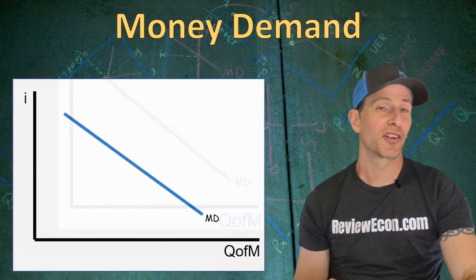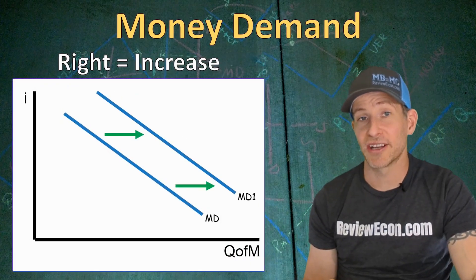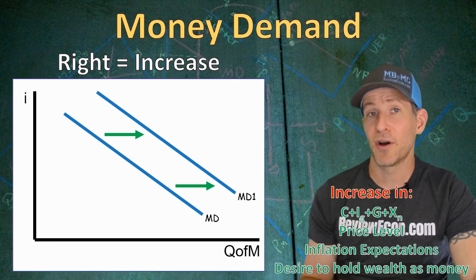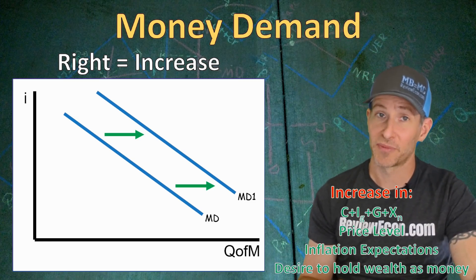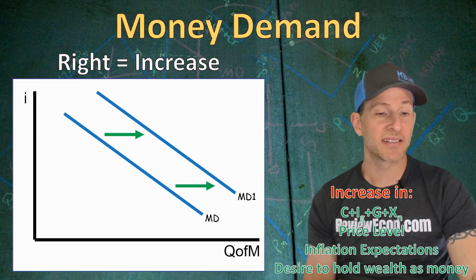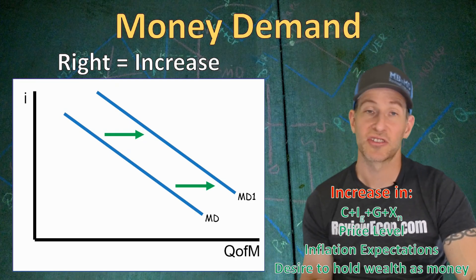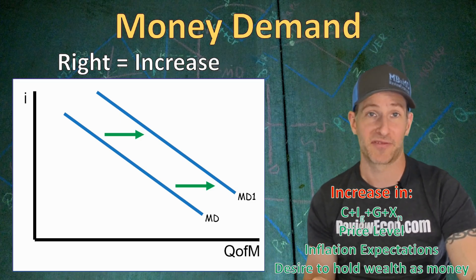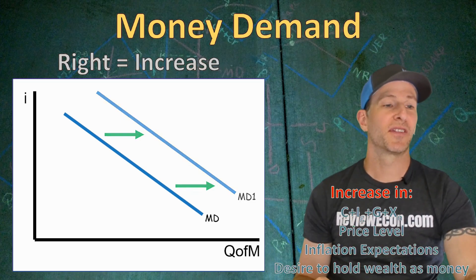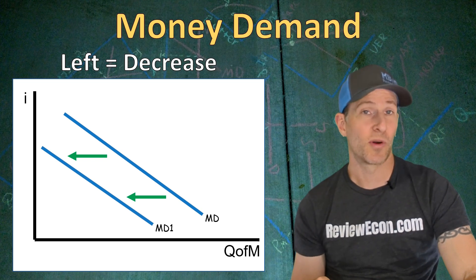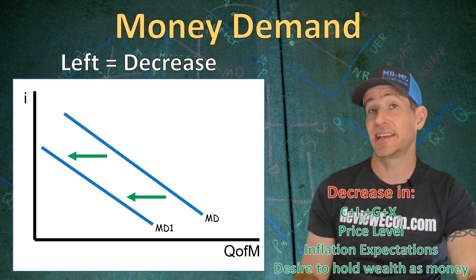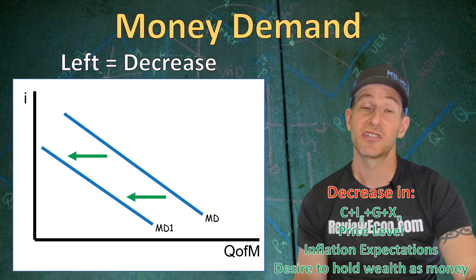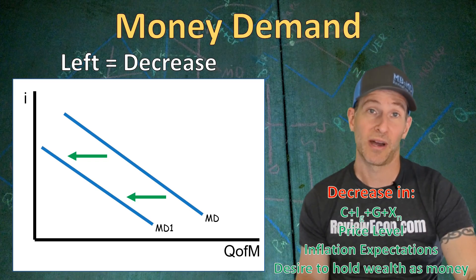Just like other demand curves, a rightward shift is going to be an increase in money demand. That can come from an increase of any component within the output expenditure formula for GDP, an increase in the price level, inflation expectations, or a desire for people to hold their wealth as money. A leftward shift is going to be a decrease, and that can come from a decrease in any component of GDP, the price level, inflation expectations, or people's desire to hold their wealth as money.